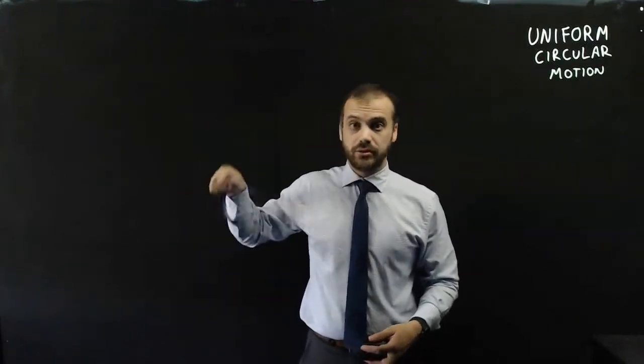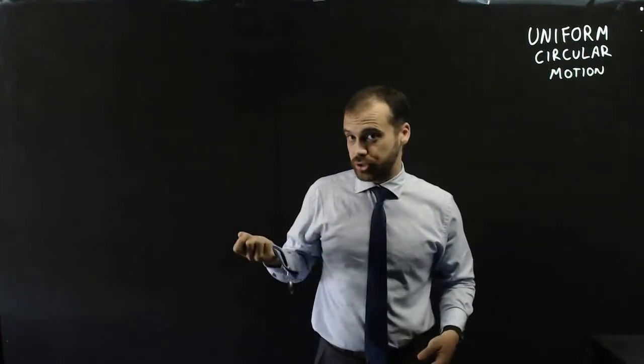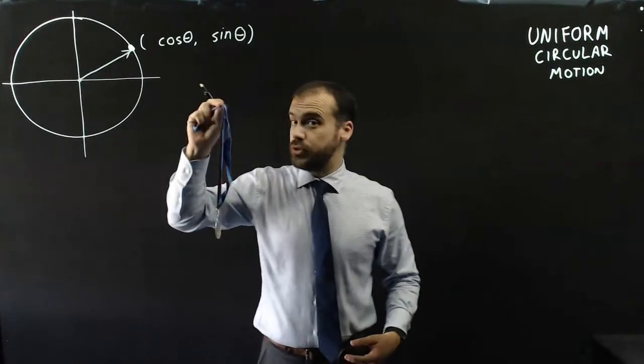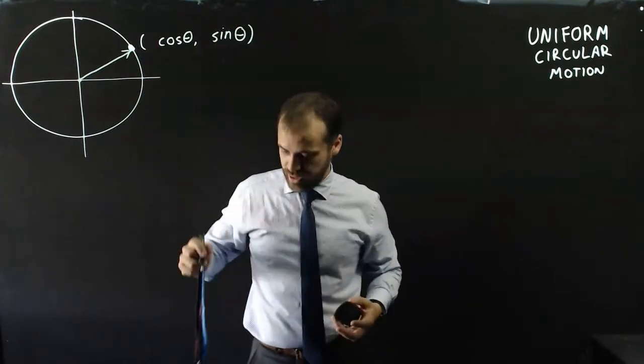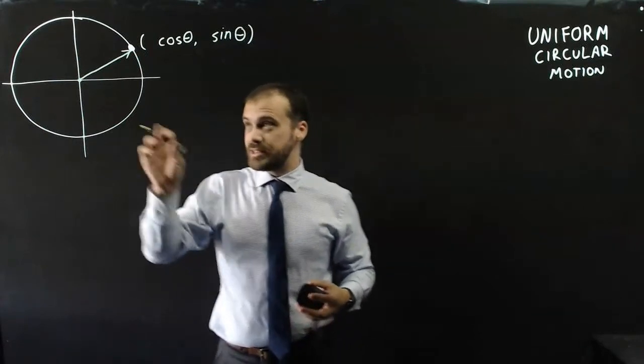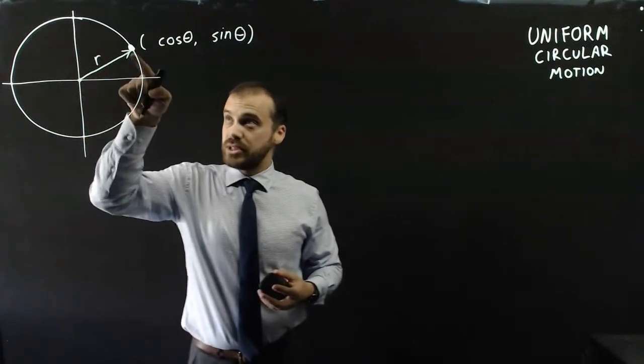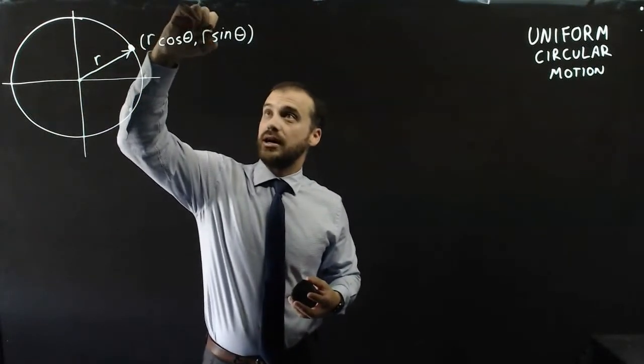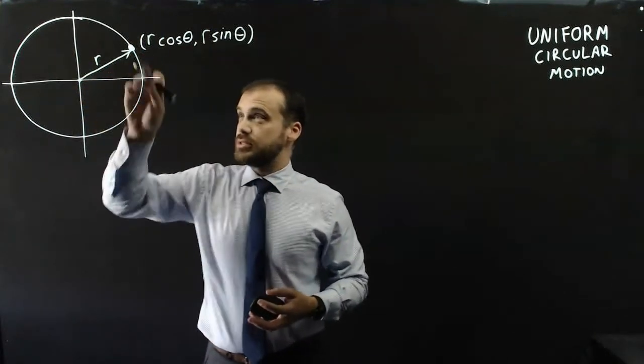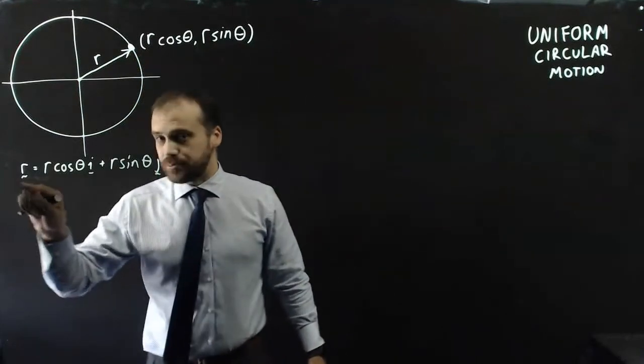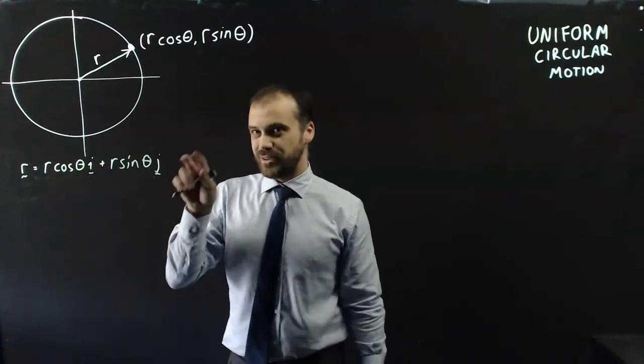Alright, so I take this medallion and I swing it around at a constant speed. What I've got is uniform circular motion. If the string is one unit in length, we can say that the position of the bit on the end is cos theta, sine theta. But if the length of my string is longer, let's just say r, then the position of this point is r cos theta, r sine theta. We can create a vector equation for this point. The displacement of our object is equal to r cos theta i plus r sine theta j.